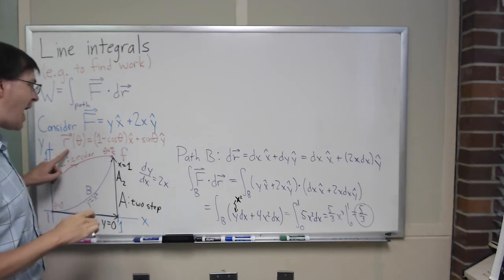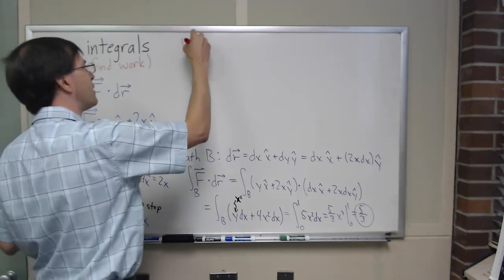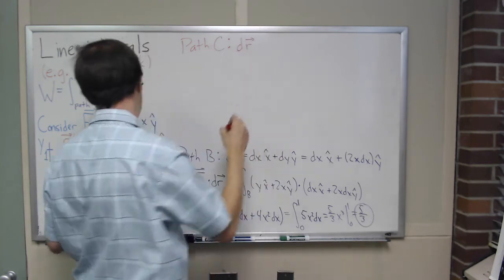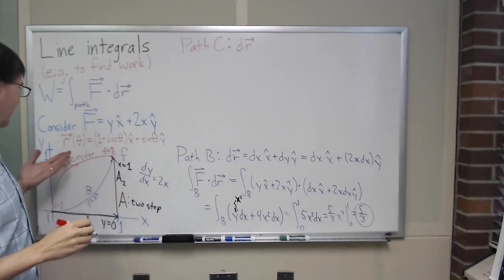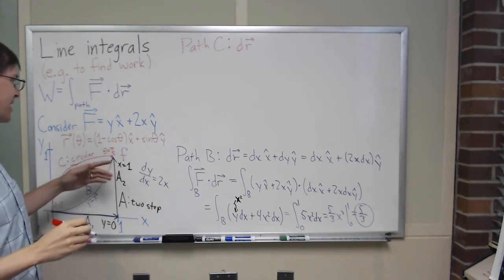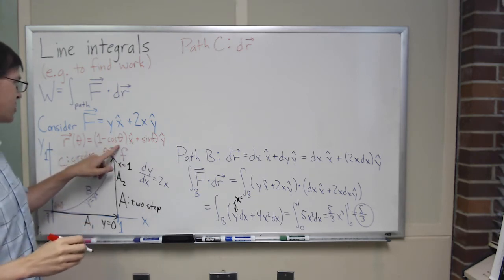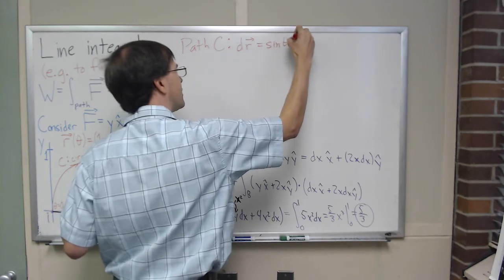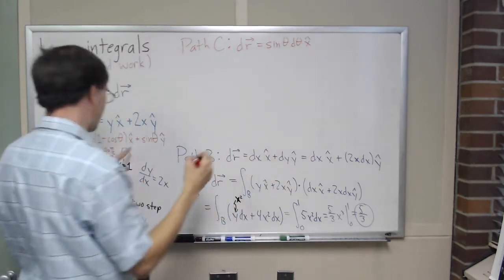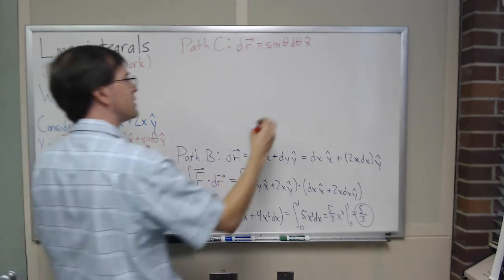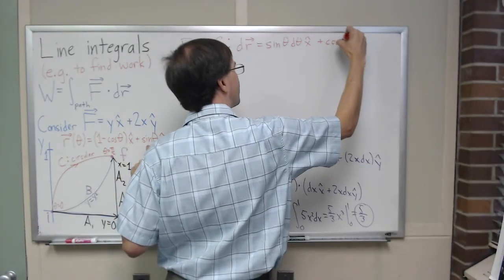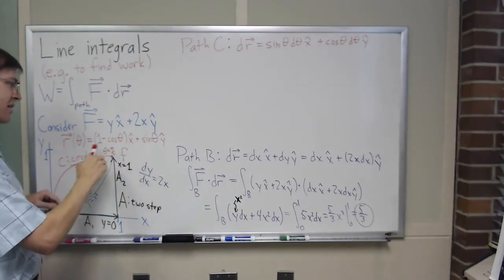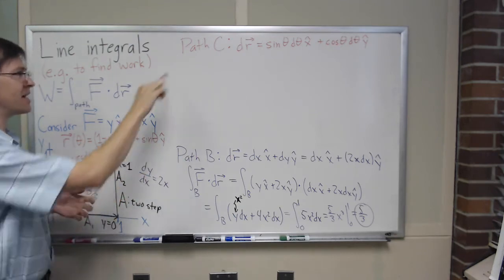For path C, my first step is to write down the dr vector. I compute dr/dθ and then multiply both sides by dθ. The derivative of (1 minus cosine θ) is positive sine θ, so dr gets a sine θ dθ x̂ term. The derivative of sine θ is cosine θ, so dr also gets a cosine θ dθ ŷ term. So dr equals sine θ dθ x̂ plus cosine θ dθ ŷ.